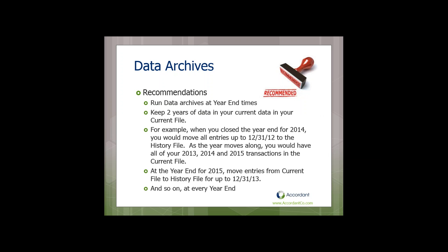We recommend running data archives at year-end. We recommend keeping two years of data in your current file. For example, when you close year-end for 2014, move all entries up to 12/31/12 to the history file. As the year moves along you'd have 2013, 2014, and 2015 in the current file. At year-end 2015, move entries up to 12/31/13 to history, and so on each year.